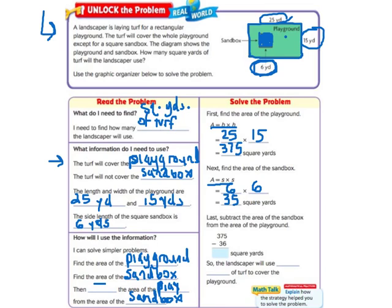So now comes the part where we take the playground area and subtract the sandbox area. Because we don't want grass in the sandbox. So 375 minus that 36 gives us 339 square yards. So the landscaper will use 339 square yards of turf to cover the playground.